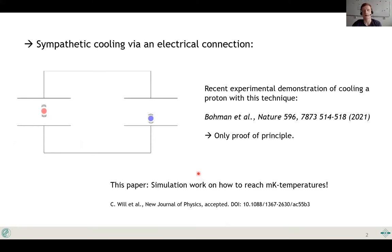We think we have found a general solution using sympathetic cooling via an electrical connection. The setup for this looks like that: we have the particle of interest, in our case a proton or antiproton, in one trap, and a laser-coolable species, in our case beryllium ions, in the other trap.